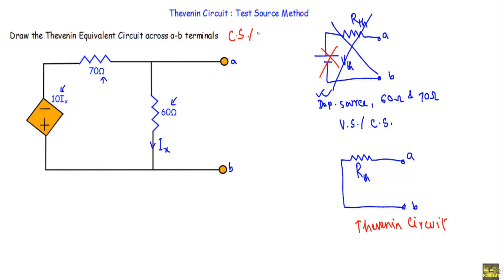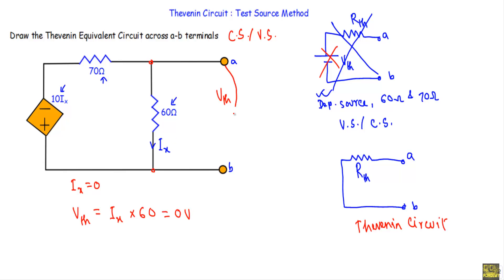There is no independent current source or voltage source. According to the law of energy conservation, since there is no external power supplied in the circuit, there should not be any voltage drop or current flow in the network. Therefore, the current Ix should be equal to zero. As Ix equals zero, the open circuit voltage Vth — which is the voltage across the A-B terminals — will be equal to Ix times 60, which is also zero.